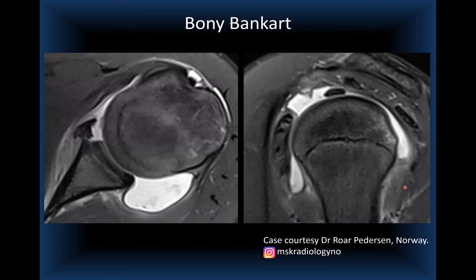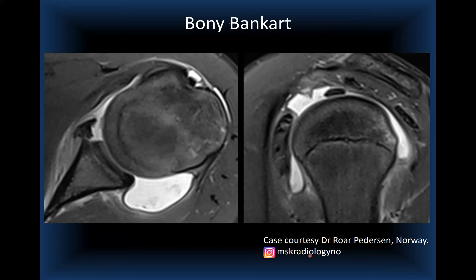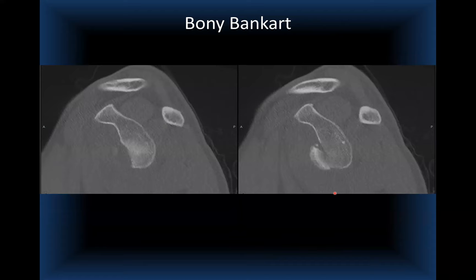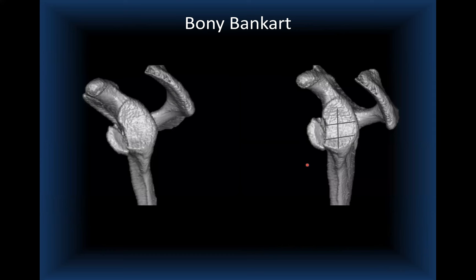Dr. Petersen posts great MSK cases on Instagram (MSK Radiology Norway). CT is very useful in these cases, particularly for accurate quantification of the percentage of bone loss, size of the Bankart fracture fragment, and degree of comminution. 3D reconstruction, which orthopedic surgeons appreciate, illustrates the concept of inverted pear morphology — where the normal pear-shaped glenoid looks like someone took a bite of it.